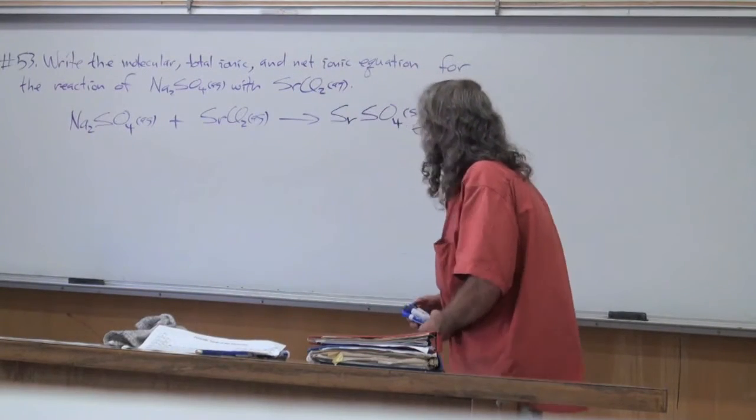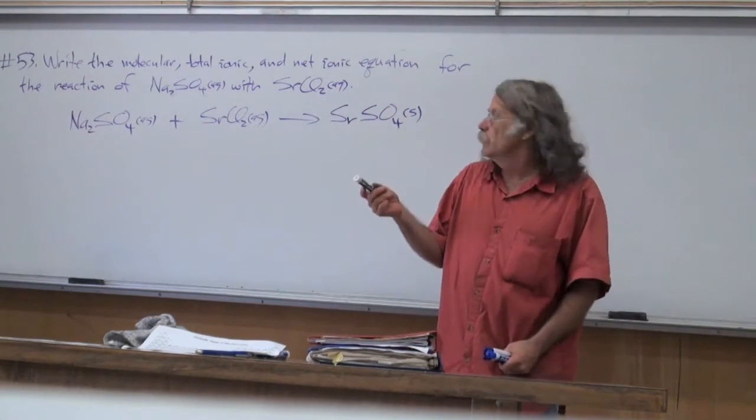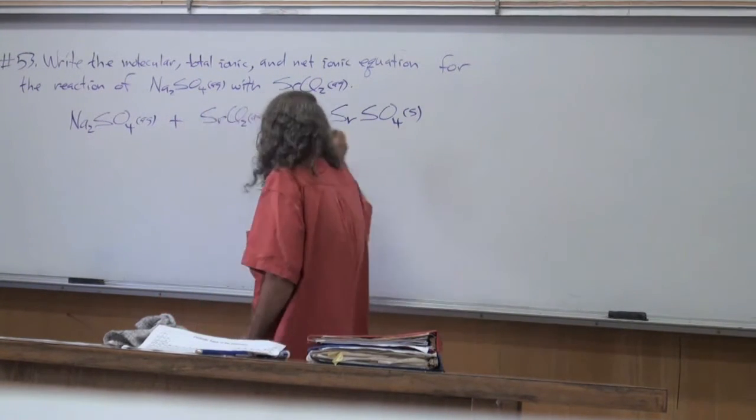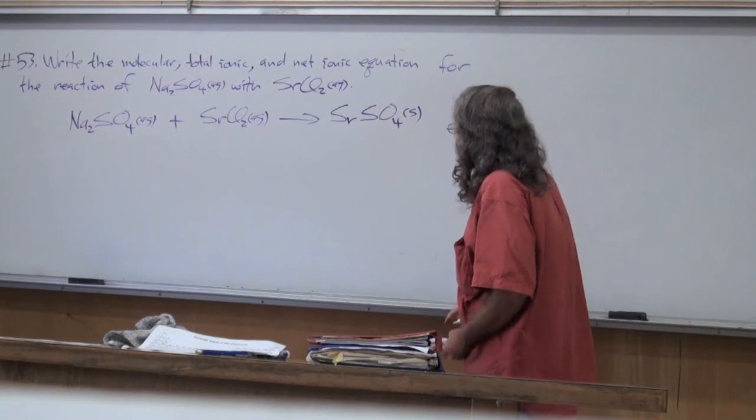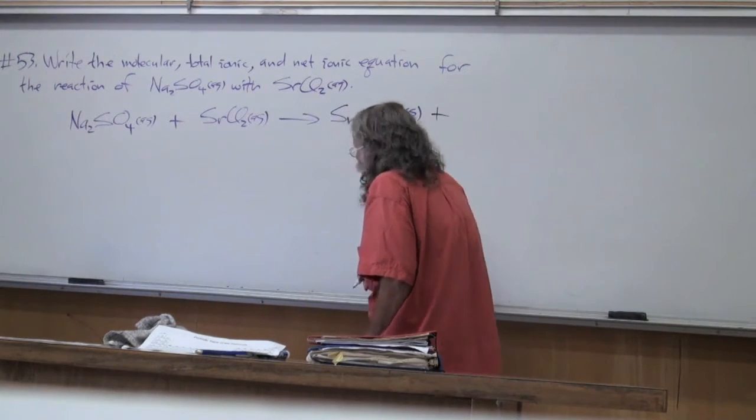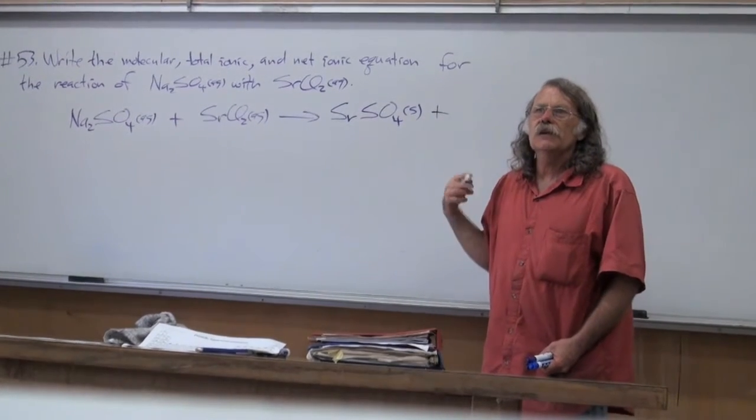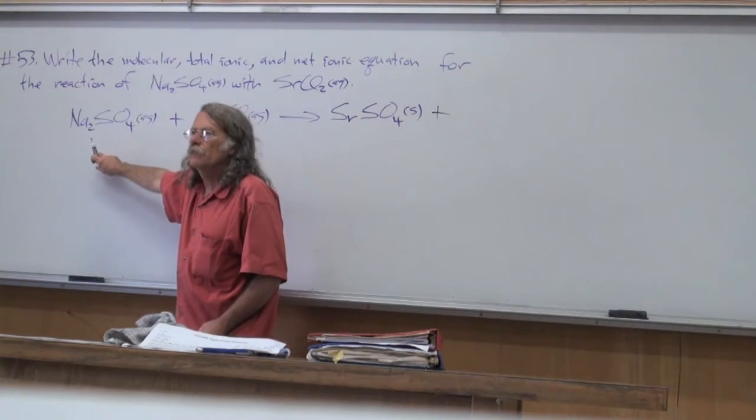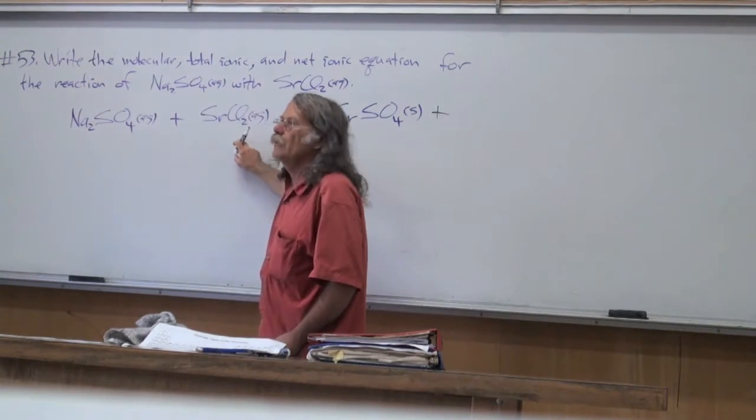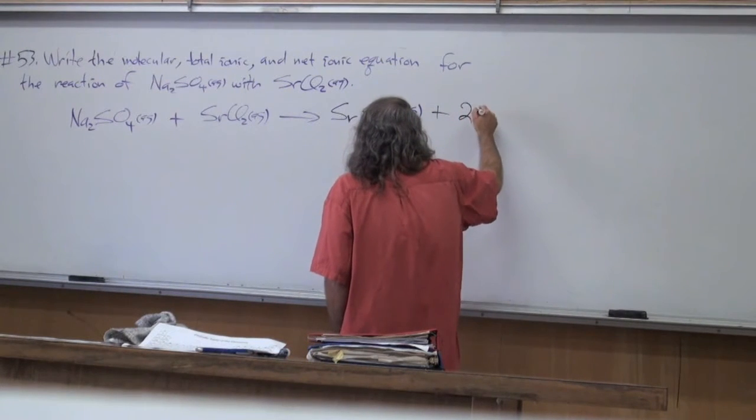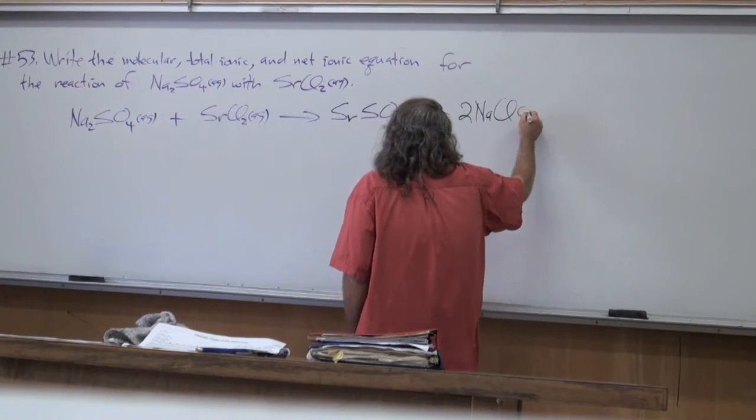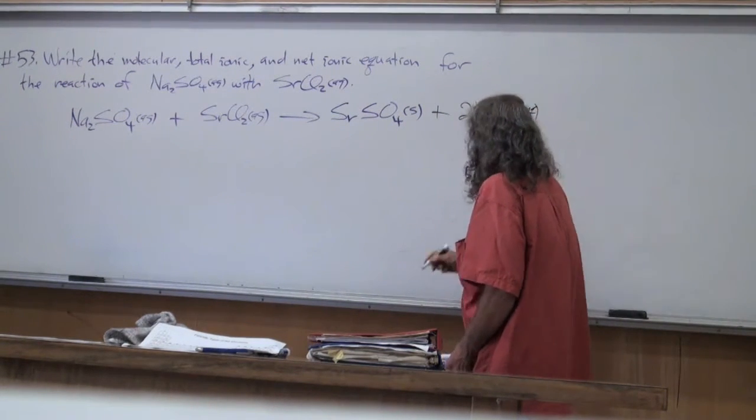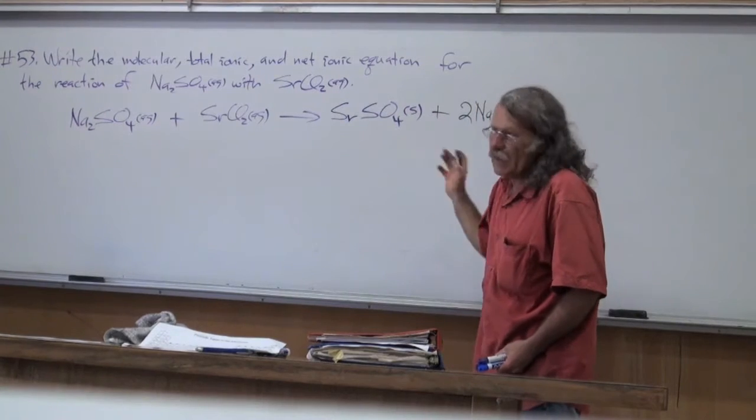For the main group metals, the charge equals the group number. So it had to be plus two. And you know the charge on sulfate was minus two, as you can tell by looking at sodium sulfate. So that means it's a one-to-one salt. That's going to be the participants. What do I do with the spectators? What's the charge on sodium? What's the charge on chloride? And is it soluble? So I write aqueous. All of that is the molecular equation.